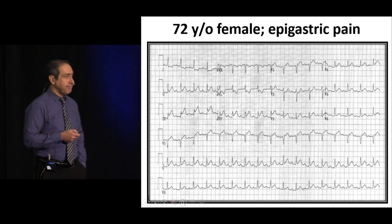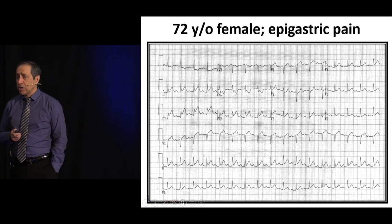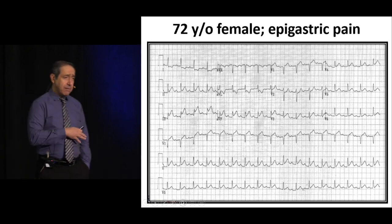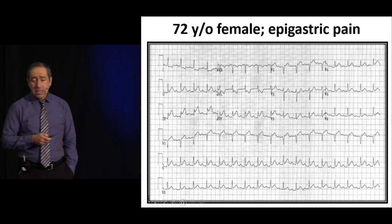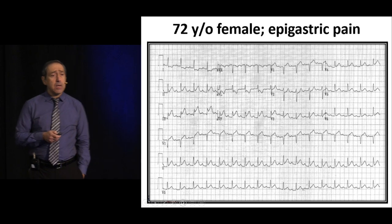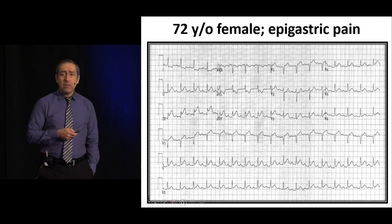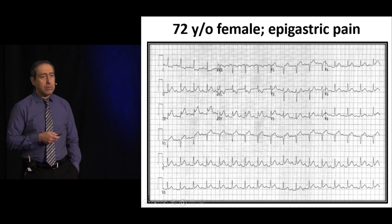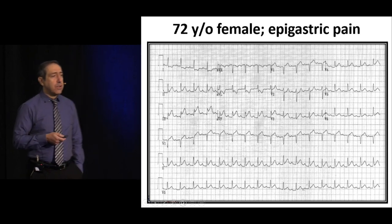This is very likely inferior MI. We looked for reciprocal changes. Whenever you have inferior MI — something you'll see very commonly in clinical practice — look for right ventricular and posterior involvement. On the same EKG, your eye should go next to V1. Do we have ST segment elevation in V1? That tells us the right ventricle is involved. If you already have it in V1, there's no need to get right-sided leads.